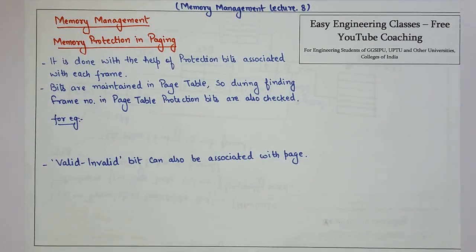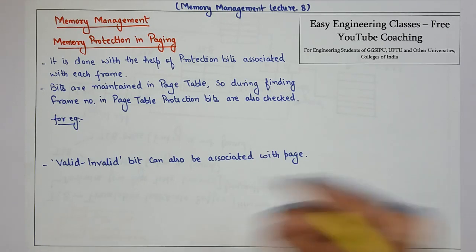To achieve memory protection in paging, there are certain protection bits which are associated with each frame. These bits are maintained in the page table, and during finding the frame number in the page table, protection bits are also checked.